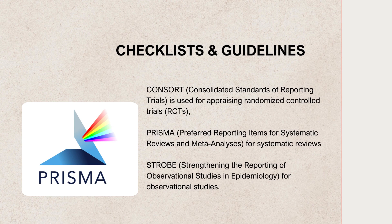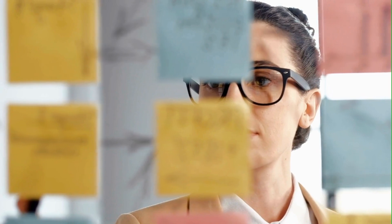STROBE is another system, and STROBE refers to Strengthening the Reporting of Observational Studies and Epidemiological Studies. It can be used to ensure that important aspects of the studies are not missed, like results, methodologies, and conclusions.